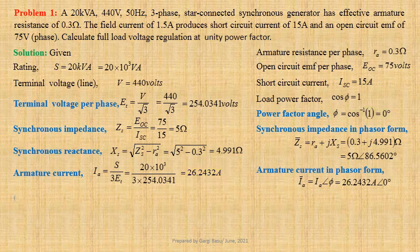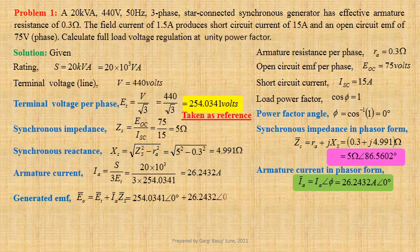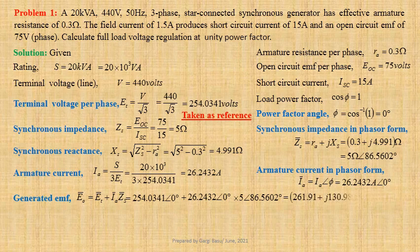Expression for generated EMF: E0 equals ET plus Ia times Zs. Taking ET as reference we get 254.0341 at an angle 0 degree, plus 26.2432 at an angle 0.0 degree, into 5 at an angle 86.5602 degrees. That gives us 261.91 plus J130.98 volts.